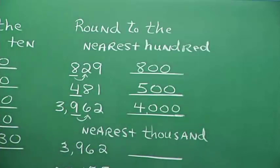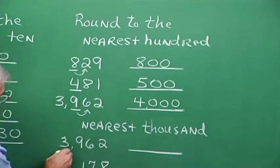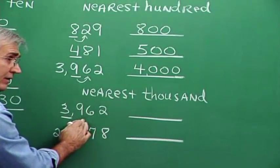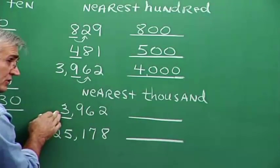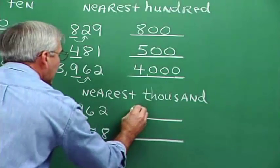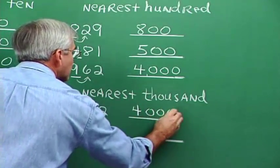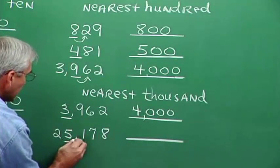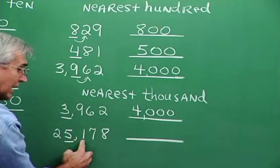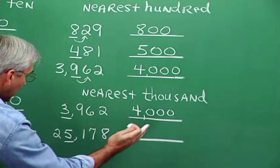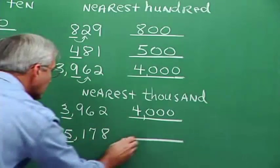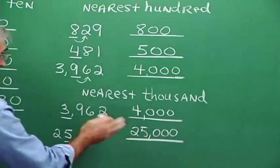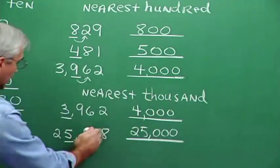Rounding to the nearest thousand: we identify the thousands digit. Look at the digit to the right — if it's 5 or bigger, we make the thousands digit one bigger and put zeros as placeholders for the other digits. For 25,100 rounded to the nearest thousand: the thousands digit is 5, and we look at the number just to the right, which is 1. Since 1 is less than 5, we just drop these off and make them zeros, giving 25,000.